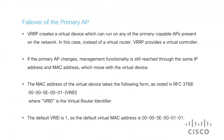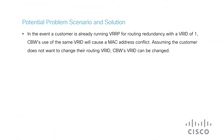Now I'll discuss the potential problem and solution. In the event that a device is already running VRRP for routing redundancy with a VRID set to 1, the CBW device with the same VRID will cause a conflict with the MAC address. If we don't want to change the routing VRID, then the CBW's VRID can be changed.